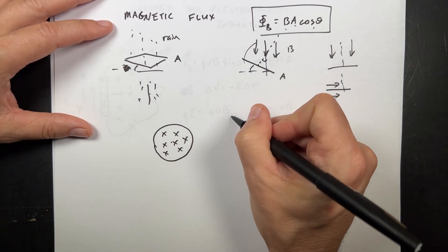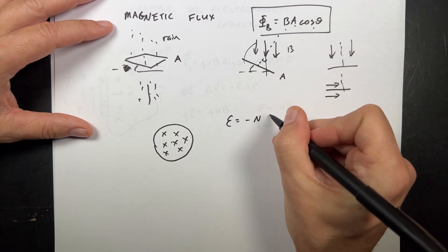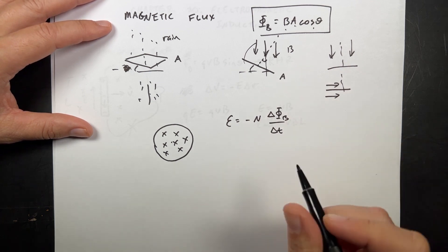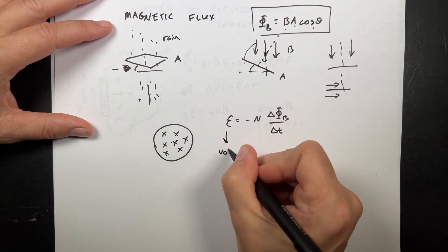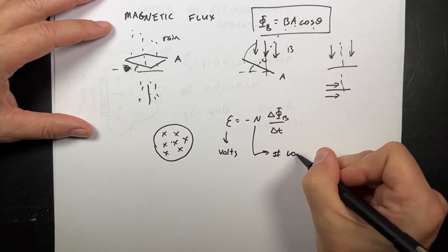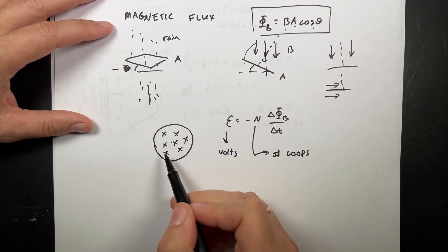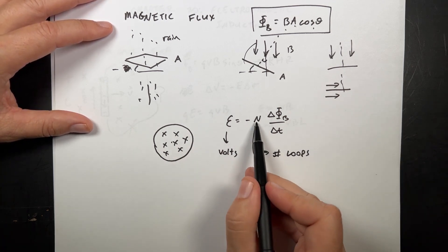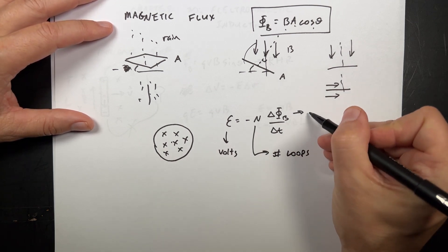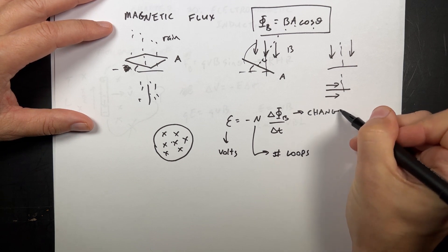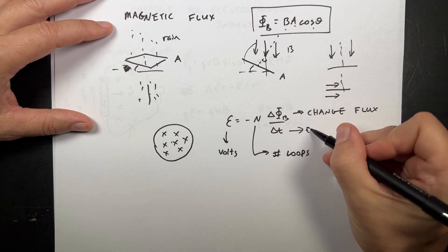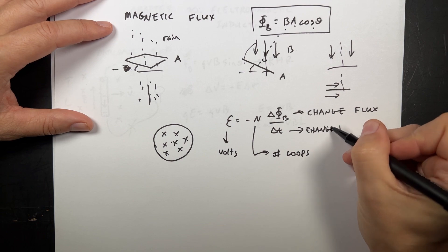And so this is the way the book writes it. They write EMF equals negative N delta phi B delta T. So that's the voltage around the loop. N is the number of loops. Because normally I could wrap a whole bunch of wires around here. I could do a thousand times and it would increase this factor by a thousand. Every loop gets its own voltage. This is the change in flux. Change. Change is important. Per time. Change in time.